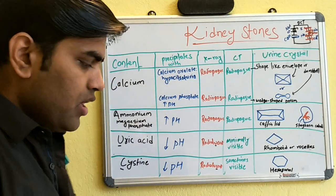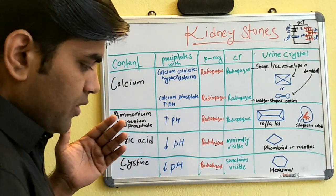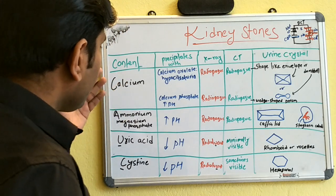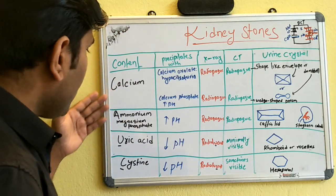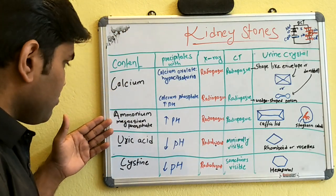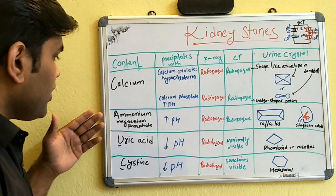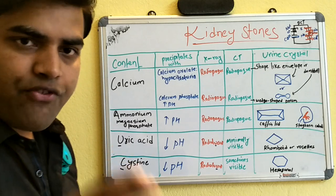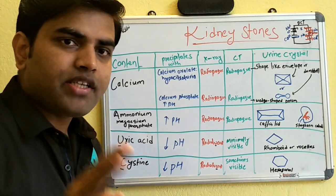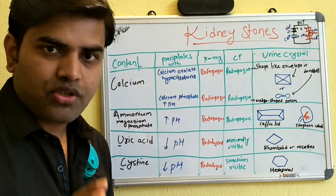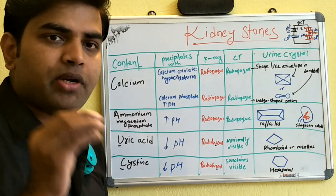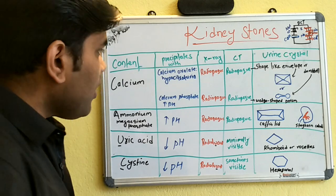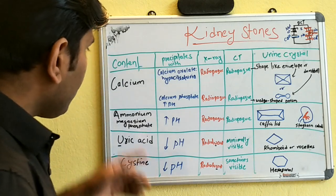Renal stones are divided into four basic types: calcium stones, ammonium magnesium phosphate stones, uric acid stones, and cystine stones. These are the four basic types of stones that may be present in your renal system.